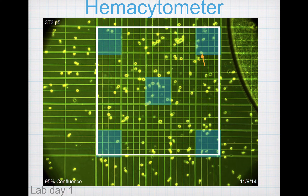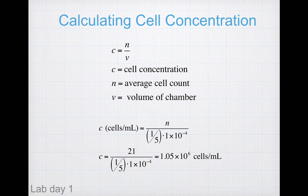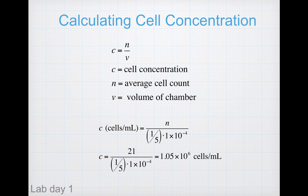The cell concentration is calculated as the average cell count divided by the chamber volume. If you counted those five squares, your actual volume is one-fifth times 1×10⁻⁴ mL. Using an average cell count of 21, dividing by (1/5 × 1×10⁻⁴) gives a total of 1.05×10⁶ cells per milliliter in your cell suspension.